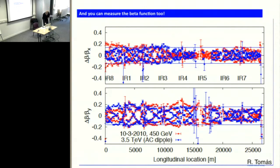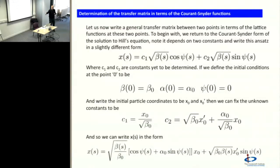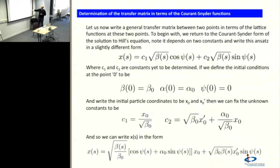How do you find the beta function? First, how do you write down the transfer matrix using the Courant-Snyder or lattice functions? This is a powerful tool. We're going to write down the transfer matrix between two points in terms of lattice functions at those two points. If I have alpha, beta, gamma here and alpha, beta, gamma there, the map between those two points only depends on those functions at each end — not what happens in the middle. That's a pretty good feature of the beta function. To begin with, let's return to our Courant-Snyder ansatz for Hill's equation. It depends on two constants: before we had epsilon and psi_0; now we write it with a cosine and sine solution with constants c1 and c2.